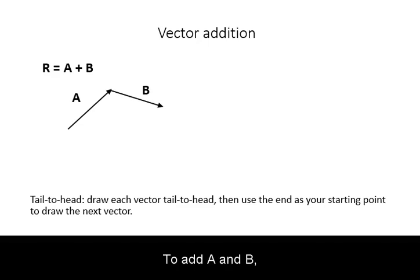To add A and B, you start by drawing the first vector tail-to-head, then use the end point as your new starting point to draw the next vector tail-to-head.